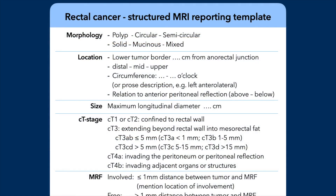We're going to talk about morphology — whether we're talking about a polyp or a circular or semicircular tumor, whether it's solid or mucinous, because mucinous tumors have a worse prognosis. Then the location, size, and clinical T stage. T1 and T2 are confined to the rectal wall, while T3 shows extension beyond the rectal wall into the mesorectal fat. T4a invades the peritoneum, and T4b is invasion of adjacent organs or structures like muscles of the pelvic floor.